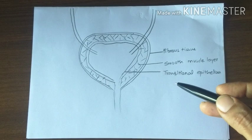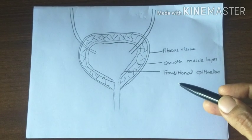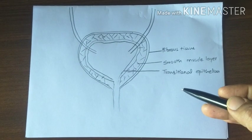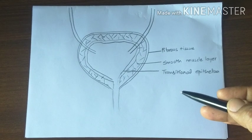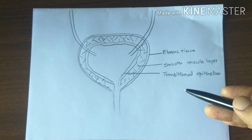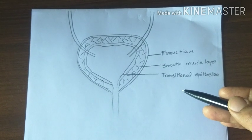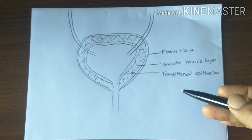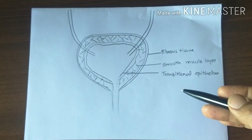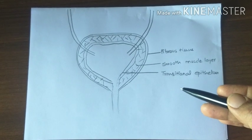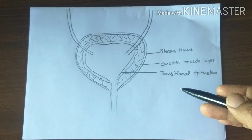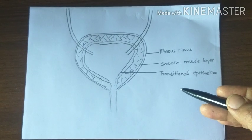The smooth muscles of the bladder are known as detrusor muscles. Contraction of the detrusor muscle is a major step in the emptying of the bladder. The smooth muscle cells of the detrusor muscle fuse with one another, creating low-resistance electrical pathways from one muscle cell to the next, so action potentials spread from one cell to the next.